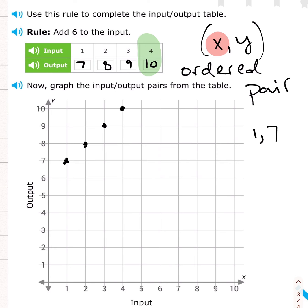All right. That is how we complete a table from a rule and graph it on a coordinate graph.